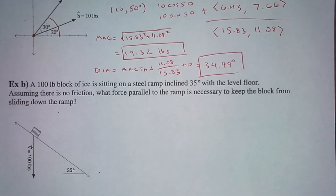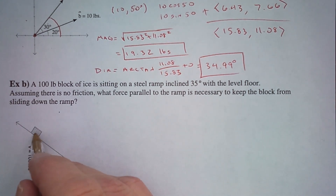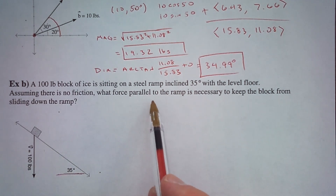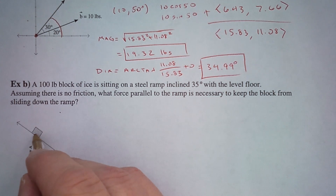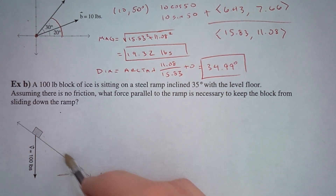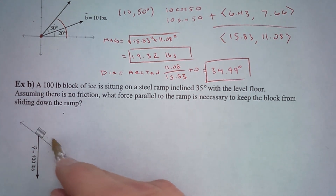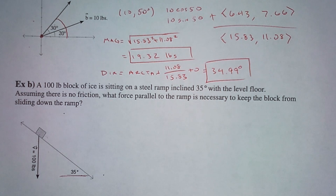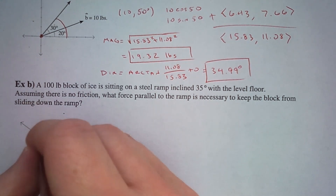Next we have a 100-pound block of ice sitting on a steel ramp inclined 35 degrees with the level floor. Here's the floor, and we have a 35-degree inclined steel ramp with a block of ice on it that weighs 100 pounds. Assuming there's no friction so it can slide freely down, what force parallel to the ramp is necessary to keep the block from sliding down? Gravity pulls this 100 pounds straight down, not along the ramp direction. The ramp forces it to go in a different direction, but less than 100 pounds acts along the ramp. The force required to hold it exactly where it is equals the force it has sliding down the ramp.